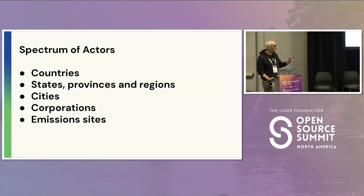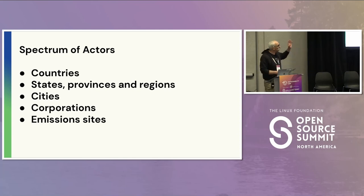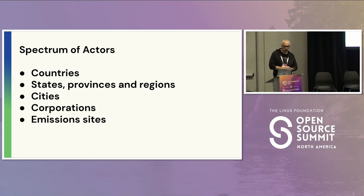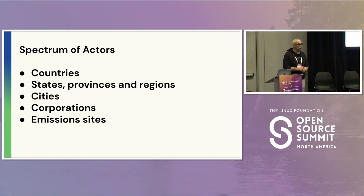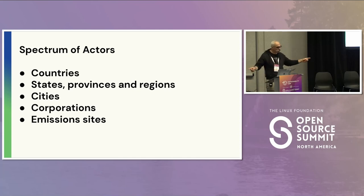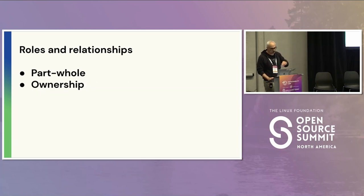Countries aren't the only actors involved in climate change. Countries are really important — they set high-level policies and have a lot of resources. But states, provinces, and regions also have policy activity. Cities are extremely important. We also have corporate actors who have climate policies and efforts, all the way down to individual emission sites like farms, mines, or factories. We've got a spectrum across different types of actors making emissions, setting targets, and taking actions.